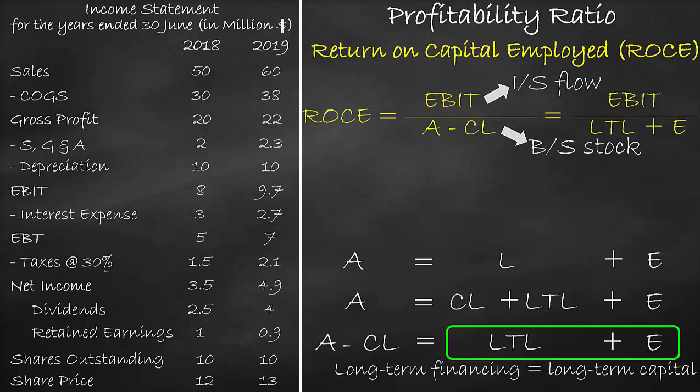Since we cannot compare a year to a day, we need to convert this by getting the average of the two balance sheet items. So we will use one income statement and two balance sheets. In summary, any time you find a financial ratio that includes an item from the income statement and an item from the balance sheet, you will use the income statement item and find the average of the two balance sheet items. So we can rewrite the ROCE as EBIT divided by average assets minus average current liabilities.